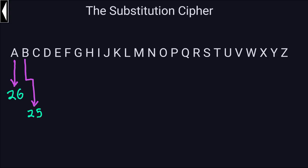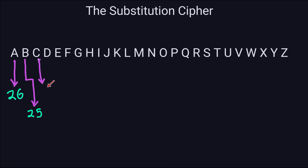Let's continue. For the letter 'c', if I already made a choice for 'a' — 26 choices — and for 'b' — 25 choices — then for 'c' I will have 24 choices. The reason is that I already chose two letters, and the letter I place for 'c' cannot repeat either of those. So for the letter 'c', I will have only 24 choices.